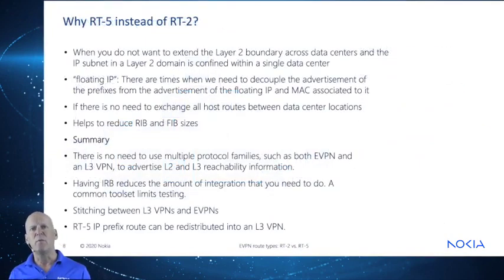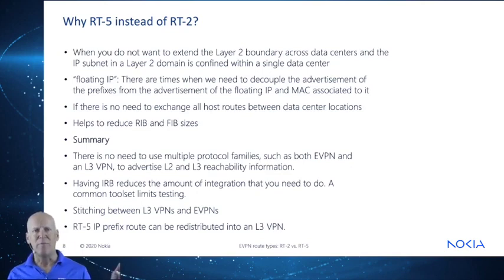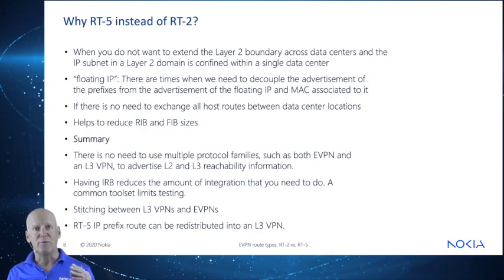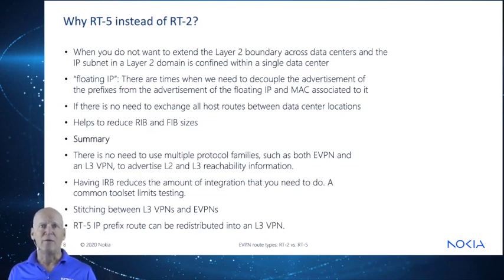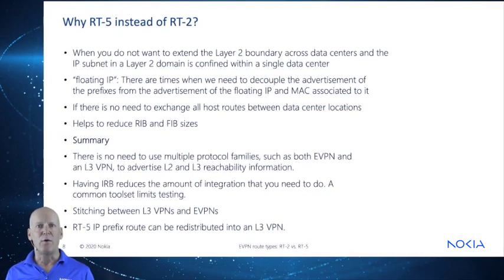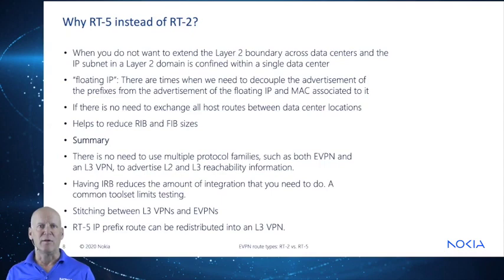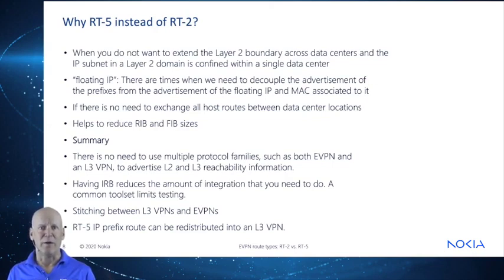Why would you choose one versus the other? It boils down to a couple of factors: first, the MAC-to-IP binding assumed by RT2 advertisement, and second, how far you want to extend your Layer 2 boundary in your data center architecture. If you're constraining L2 domains to a single data center and not allowing a subnet to exist in another data center, RT5 is probably the way to go. Also, if you have floating IPs and don't want to associate a MAC to that specific IP, that's another reason to use RT5. If you do not want or need to advertise host routes between data centers, RT5 is also key — it helps reduce FIB and RIB sizes, which matters when using merchant silicon-based routers with limited table sizes. If your design uses EVPN locally inside a data center and L3 VPN in the WAN, RT5 is the functional equivalent of VPNv4 and VPNv6 routing and allows stitching between the EVPN and L3 VPN address families.